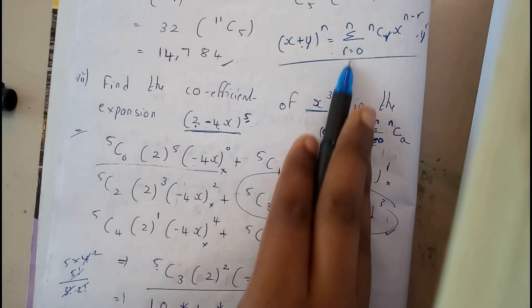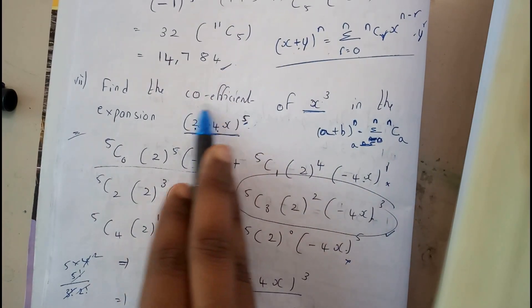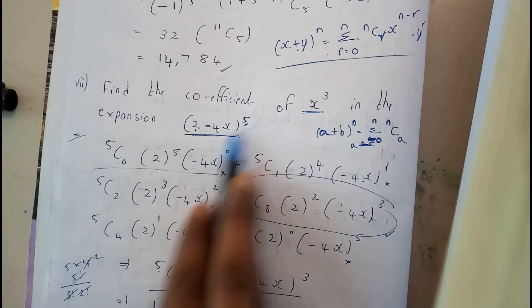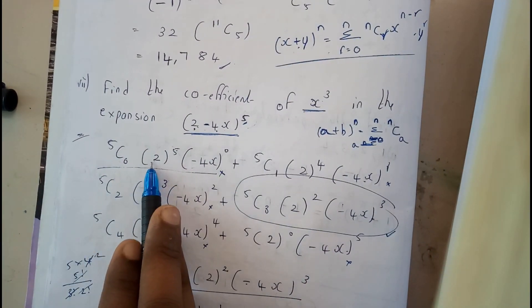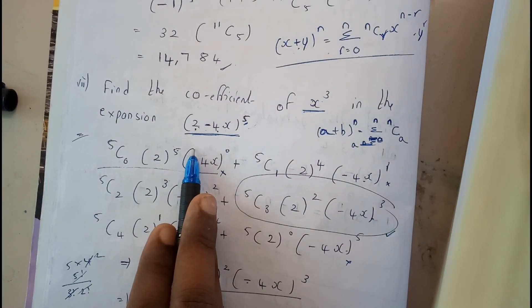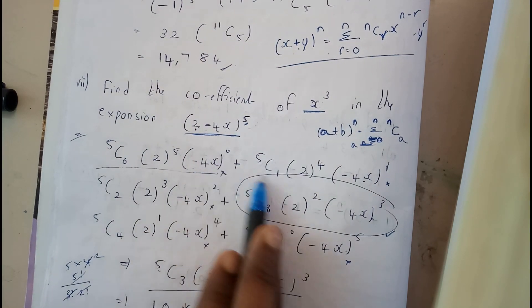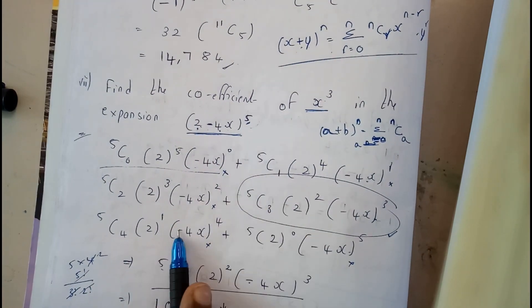We will be initially finding all the possible equations for this. So initially r equal to 0, I will be getting this equation, 5C0, 2 power n minus 5 minus 0, 5 power r, r is 0. Next 1, next 2, 3, 4, 5.